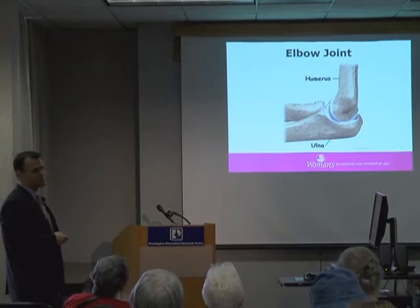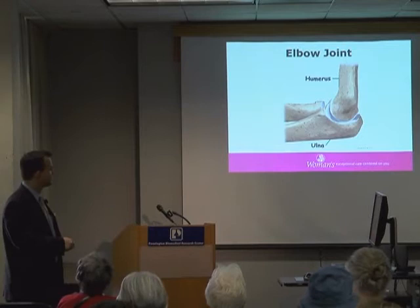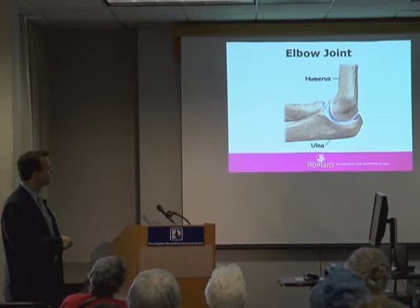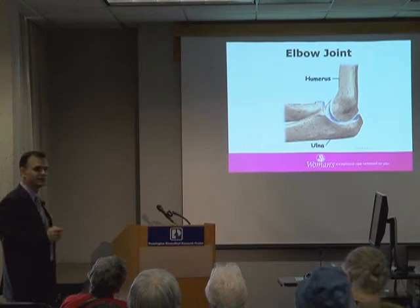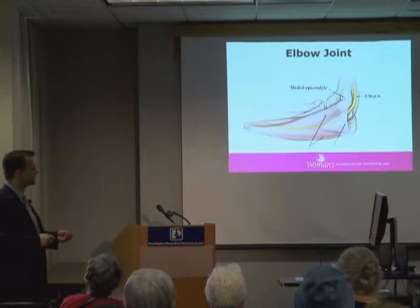Now, elbow pain. The elbow joint is a hinge joint made of the humerus — the arm bone — and the ulna — the forearm bone. There's also some contribution from the radius and humerus. But simply, it's a hinge joint made by those two bones. In reality, there are also muscles, nerves, soft tissues, and ligaments around the elbow that can also be a source of pain.